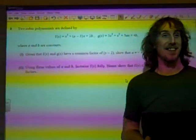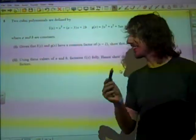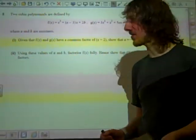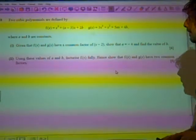It's going to be fun. Oh, we're on! Right, OK. So, this is Core 2 from May 2012, and we're on question 8, factor and remainder theorem, the kind of stuff. Two cubic polynomials are given there.